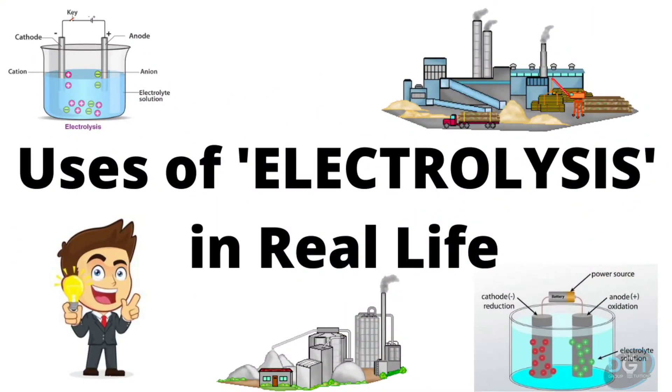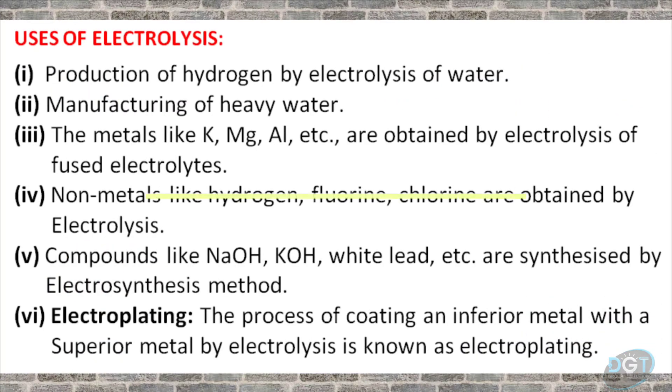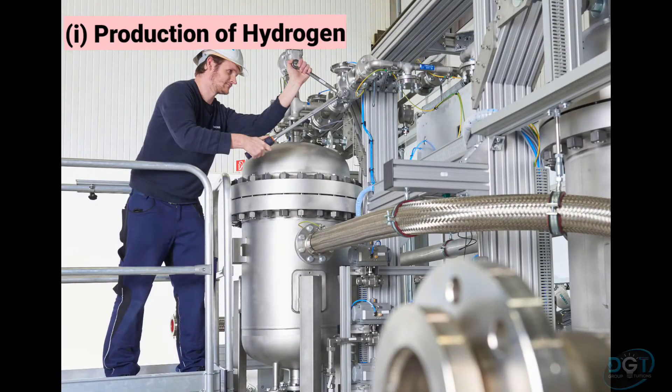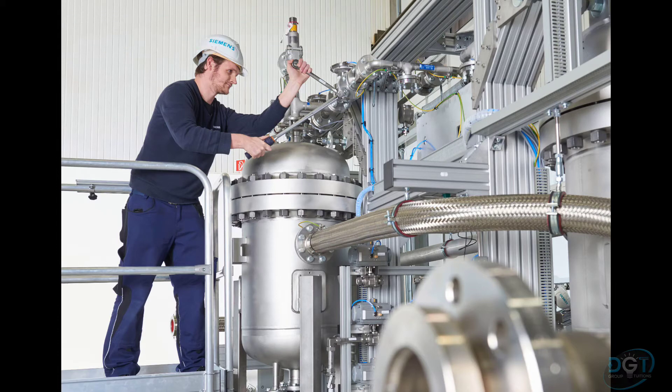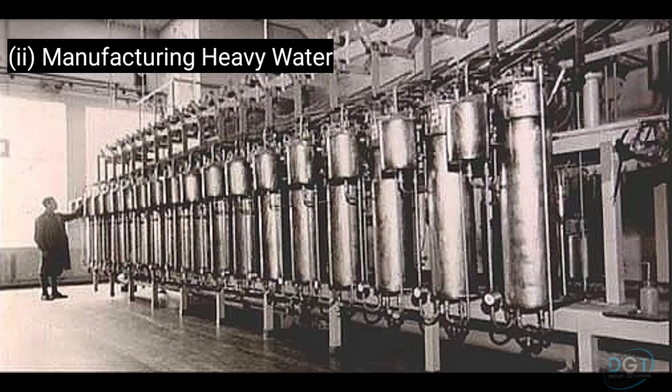Let's see the uses of electrolysis. Number one, since electrolysis is a promising option for carbon-free hydrogen production from renewable and nuclear resources, it is used for manufacturing hydrogen on a large scale.